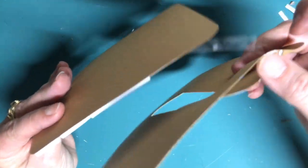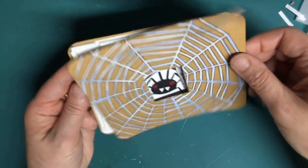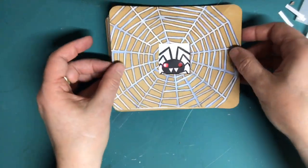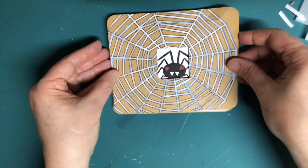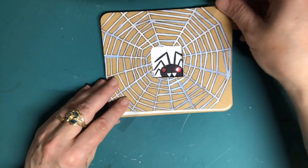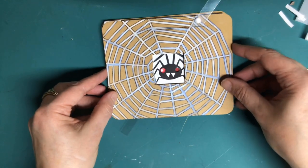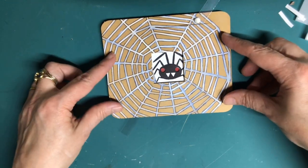Before you remove the protective backing from the foam tape, test the placement of the card front by slipping the magnetic lever through its slot. If you need to make any adjustments, now's the time to do it. Once you're happy with the way things are looking, you can go ahead and remove the protective backing and adhere the front of the card.